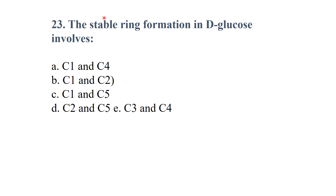Stable ring formation in D-glucose occurs between carbon one and carbon five, forming a stable ring structure.